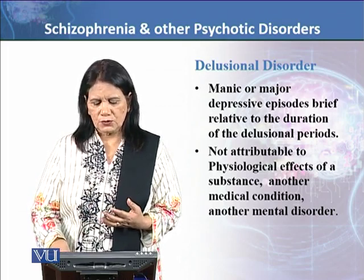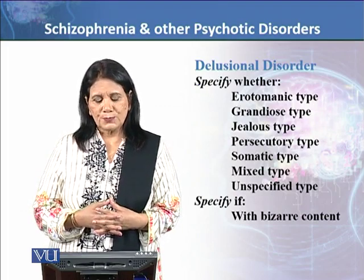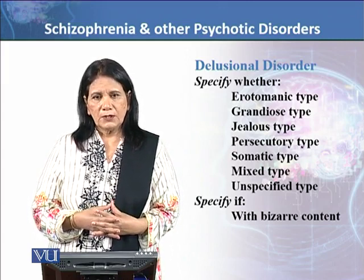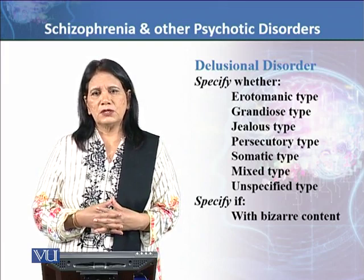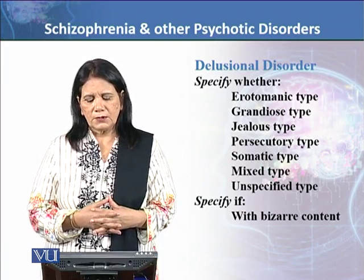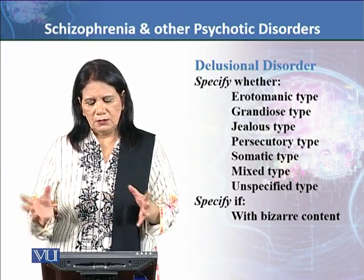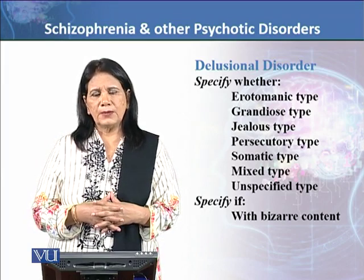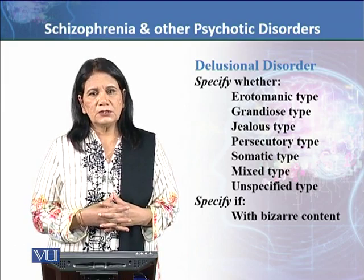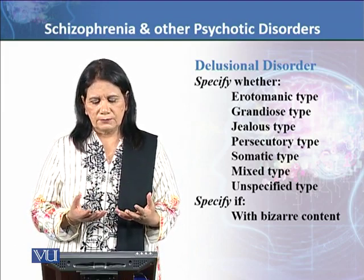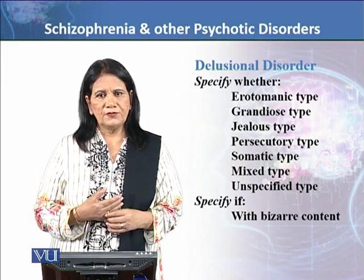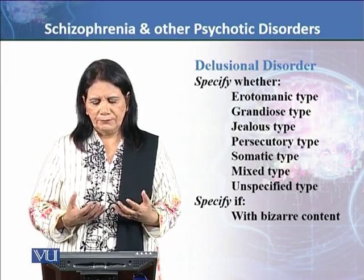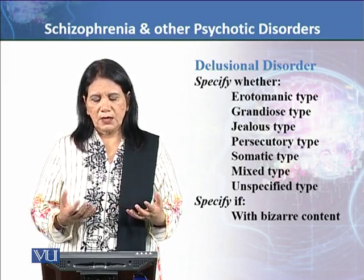You need to specify the type of delusion the patient has. Erotomanic type refers to a delusion related to sexual urges. Grandiose type is the delusion that you believe yourself to be a very important figure — be it a political figure, a prophet, an angel — you believe you are something great and deserve respect from every person.